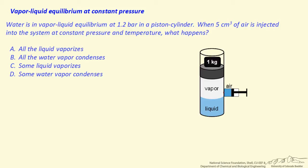The question is: when we get back to equilibrium after injecting the air, what has happened? Has all of the liquid vaporized? Has all of the water vapor condensed? Or has some of the liquid vaporized, or some of the water vapor condensed?